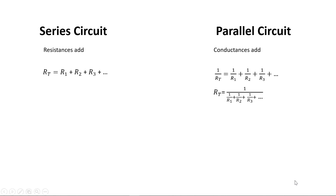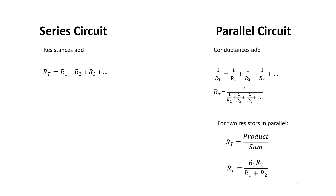There is another commonly used formula for the special case of two resistors in parallel. It's called the product over the sum formula, where RT equals R1 times R2 divided by R1 plus R2.